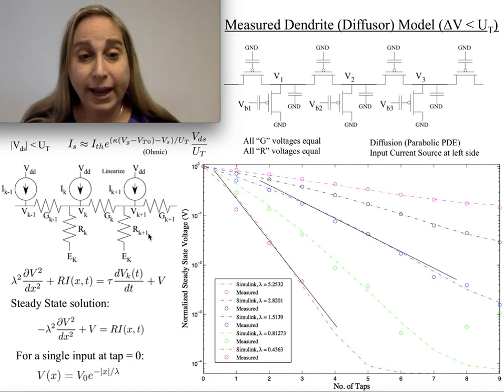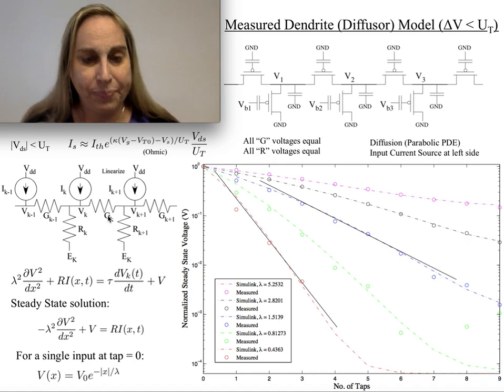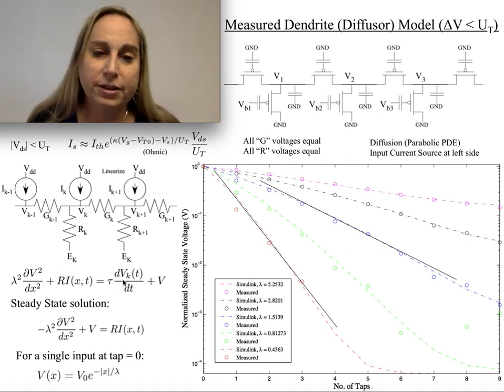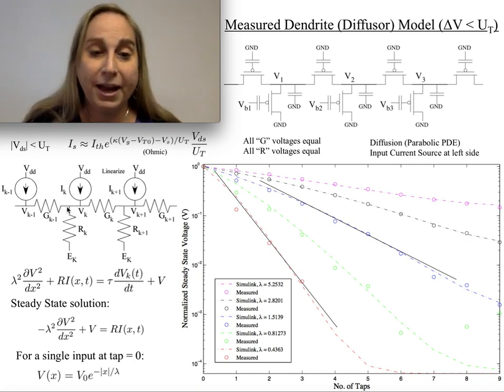So if I had a network like this, and I assumed that my R's and my G's were all equal, I actually would get this equation in both space and time, assuming I also have a capacitance from each of these nodes to a fixed potential.